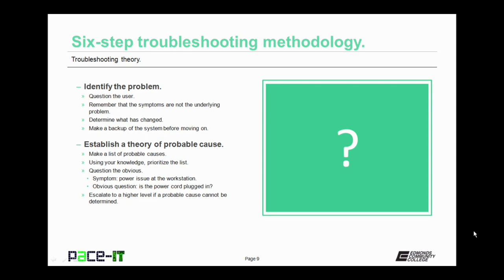Identifying the problem. The first thing you need to be aware of is that symptoms are not the problem. You need to get down to the base problem — that is the thing that is causing the symptoms to manifest. To do that, you should question the user. You need to ask them questions about when it occurred and why it occurred. You should try to determine what has changed. And before you do anything else, you need to make a backup of the system just so you can preserve everything as it is.